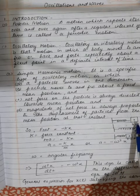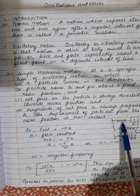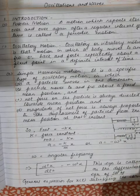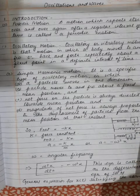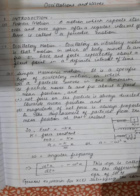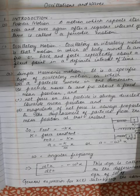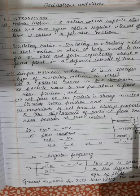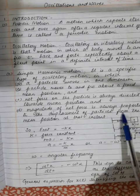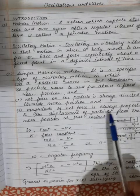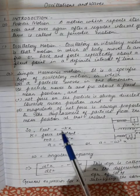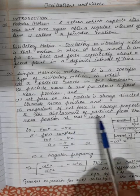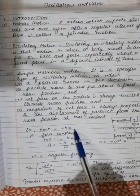In this diagram, there is an object of mass m attached to a spring with a rigid support. x = 0 is the mean position. When the object is moved to a distance x = a, a force is applied on it. The magnitude of net force is always proportional to the displacement of the particle from the mean position, so F_net = −kx.